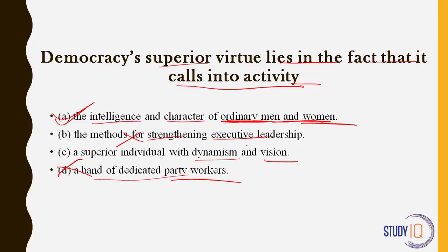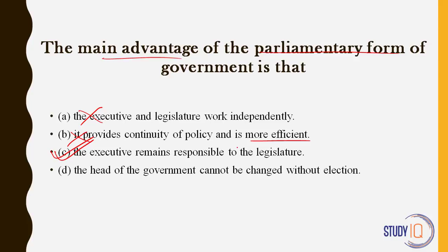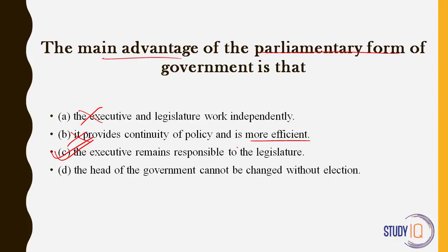What is the main advantage of the parliamentary form of government? The executive and legislature work independently — no. It provides continuity of policy and is more efficient — no; presidential forms like the USA are also efficient. The executive remains responsible to the legislature — yes, this is the answer. This is the main advantage of parliamentary form of government, where the government is formed out of the parliament itself. The head of government cannot be changed without an election — no, this is wrong; if the ruling party changes its leader, the head of government can be changed. Our answer is C.